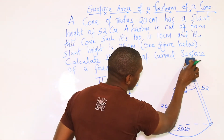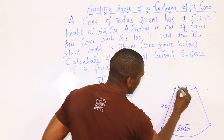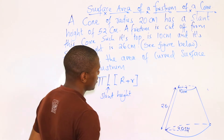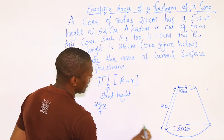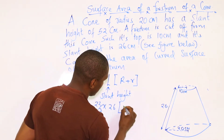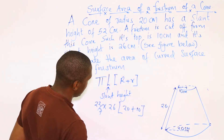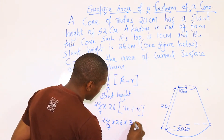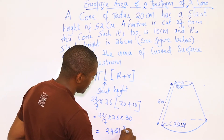In this case, consider the frustum where the radius of the upper circle is 10, the radius of the bottom is 20 centimeters, and the slant height is 26 centimeters. Substituting the values, you'll have 22/7 multiplied by the slant height 26, then in brackets the radius of the larger circle, which is 20, added to the radius of the smaller circle, which is 10. So 20 plus 10 is 30, giving 22/7 times 26 times 30. When you key in your calculator, you'll get 2451 3/7.